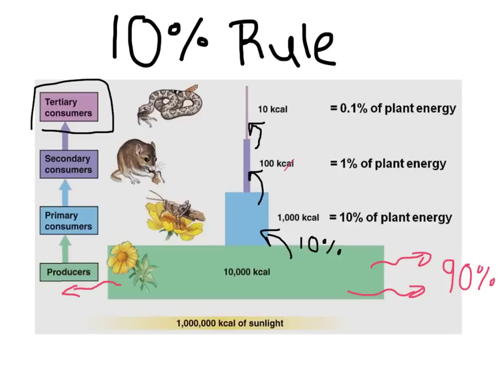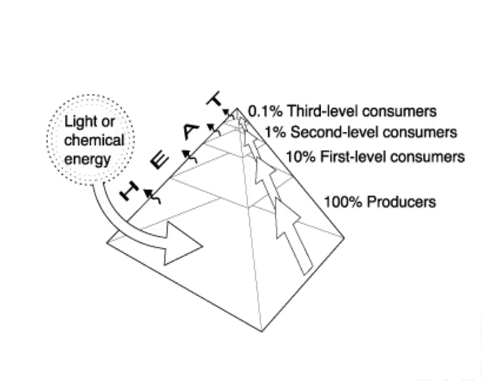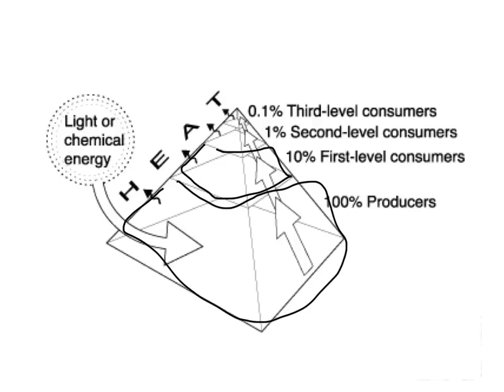99.999% of the energy has been released in the form of heat by the time you get to that third trophic level. Because of this, ecologists use ecological pyramids to represent the trophic levels in an ecosystem, starting from the base where there are the most producers, where 100% of the energy is present, but then 90% being used, leaving only 10% for the next level and so on. The trophic levels get smaller and smaller as you go, because of this heat being released at each level.